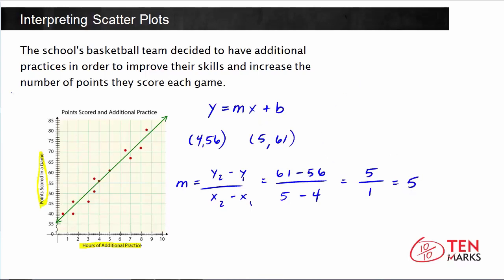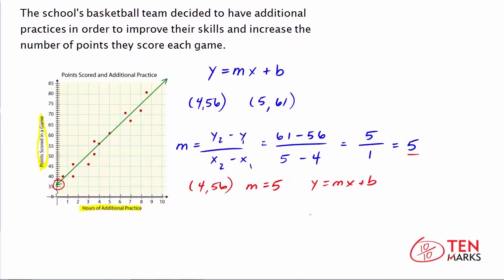Now that we know the slope, we can find the y-intercept. Now it looks like the y-intercept right here is slightly above 35. Now let's see what that exact value ends up being. To do that, since we already know the slope, we can use one of our points, and I'm going to use (4,56), and our slope value of 5, and plug this into the y equals mx plus b form. So we know y equals 56 for this point, m is 5, x is 4, and we're trying to solve for b. So begin by multiplying 5 times 4, which is 20. Now what you do is subtract 20 from both sides. So 56 minus 20 equals 36, which means b equals 36.